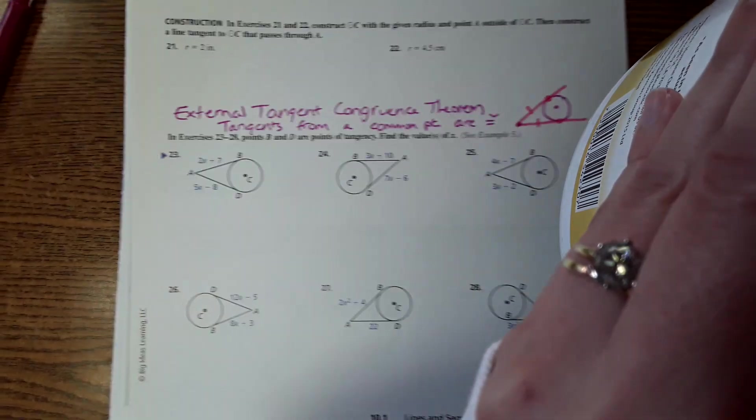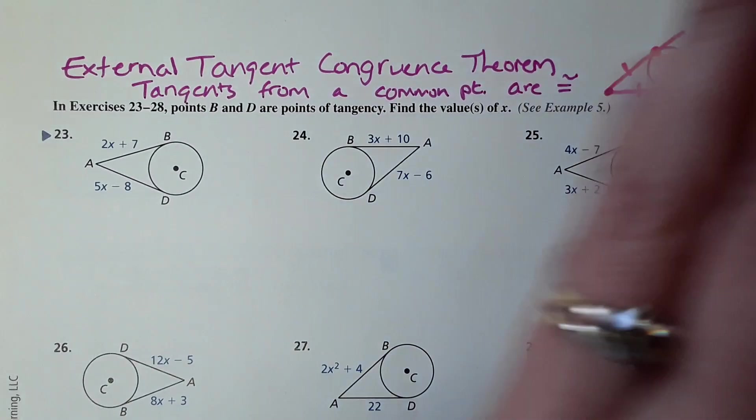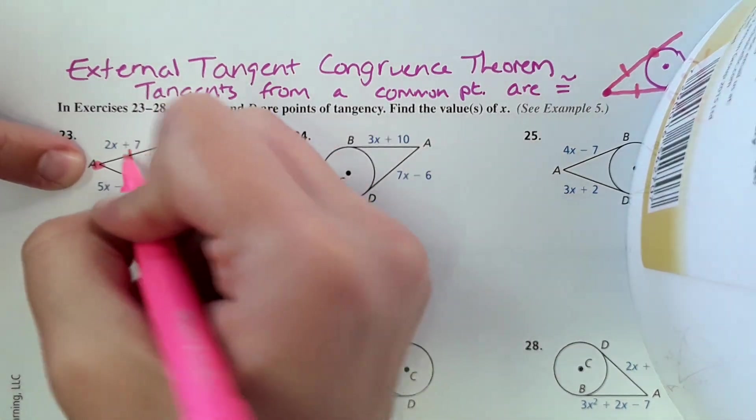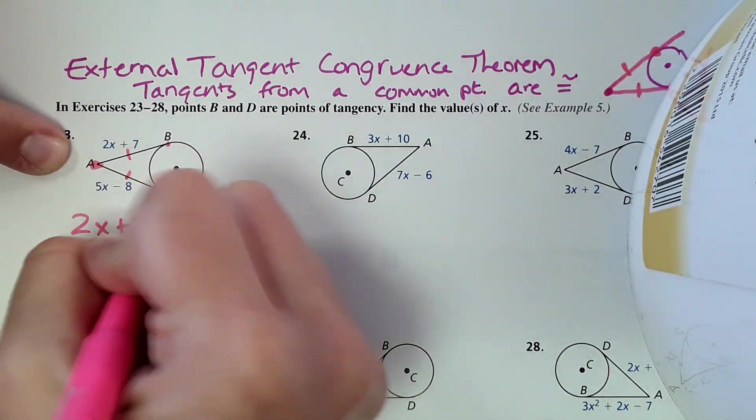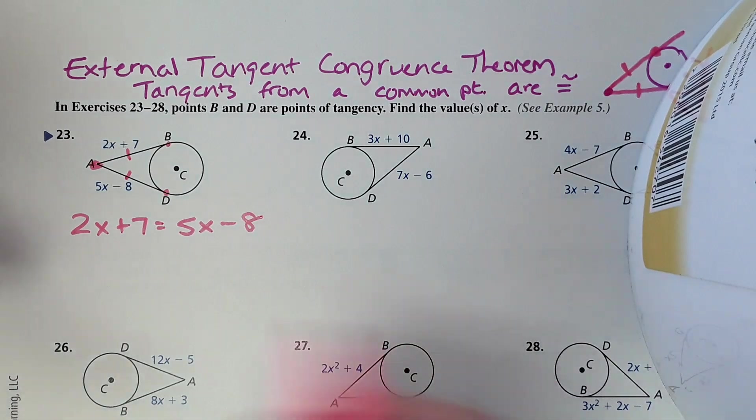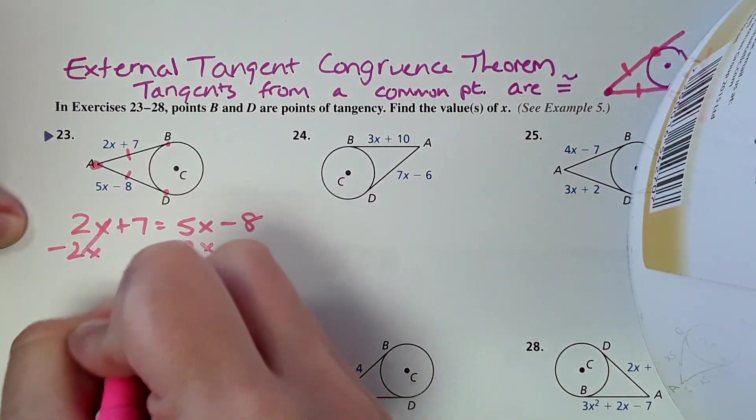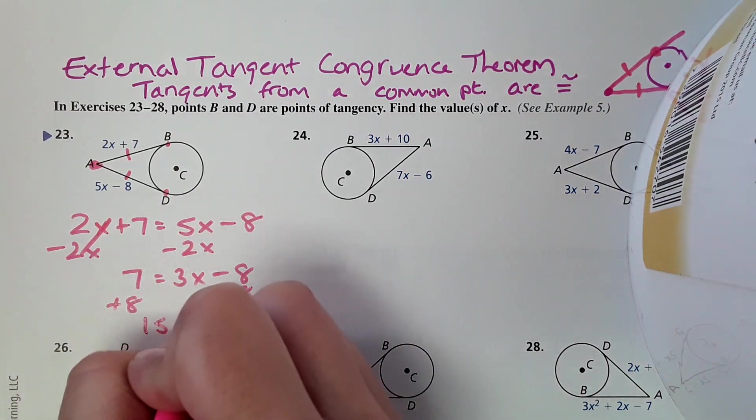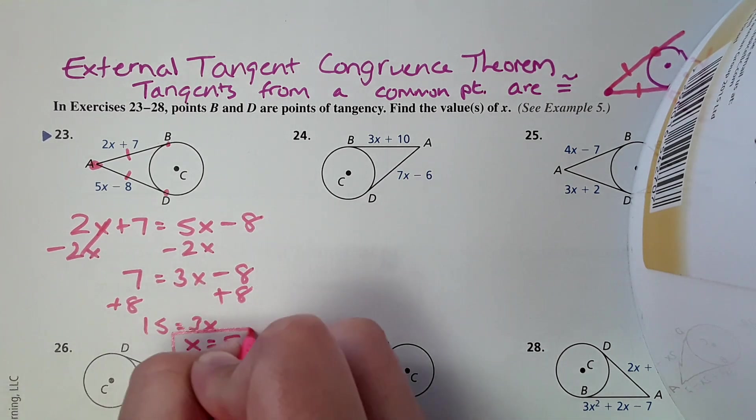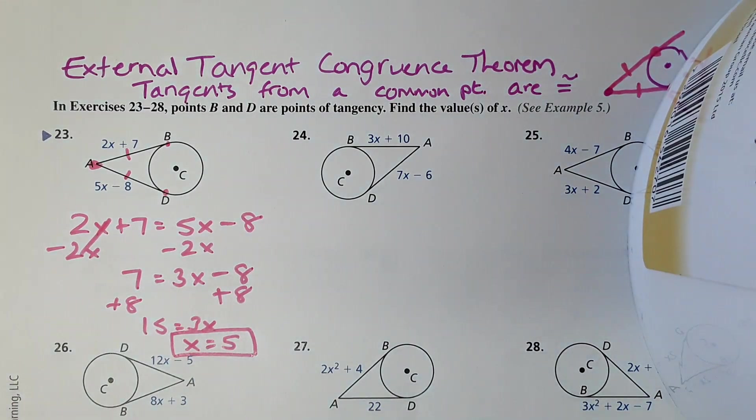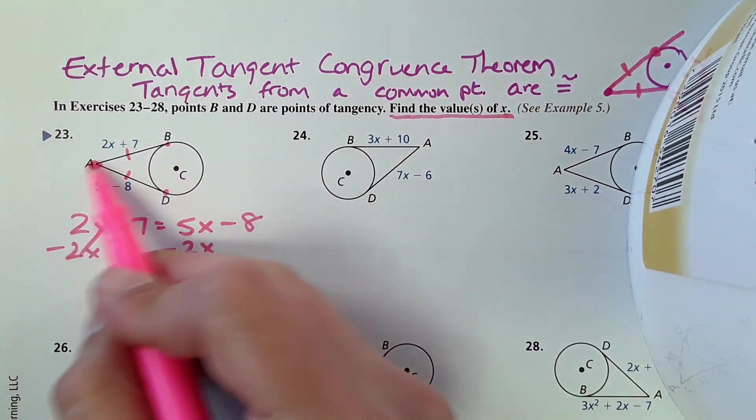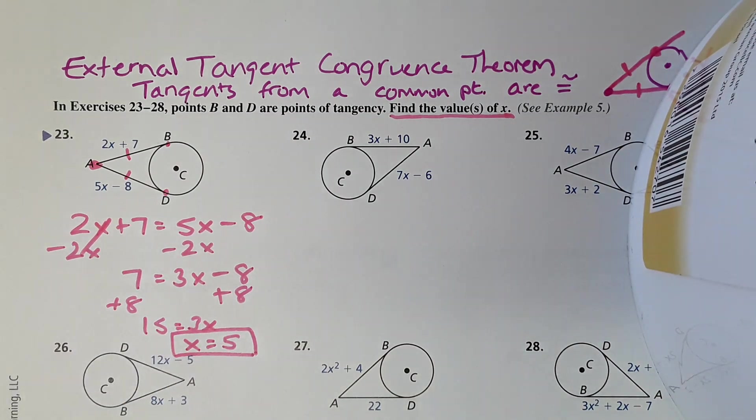And so based on that, when you see a problem like this, all you have to do is set the expressions equal and solve for x. So because these are tangents, this is the same length as this. And we can do 2x plus 7 equals 5x minus 8 to solve for x. For these problems, it just says to find the value of x. It doesn't say it wants the actual length of the segment. So as soon as we find x, we're done.